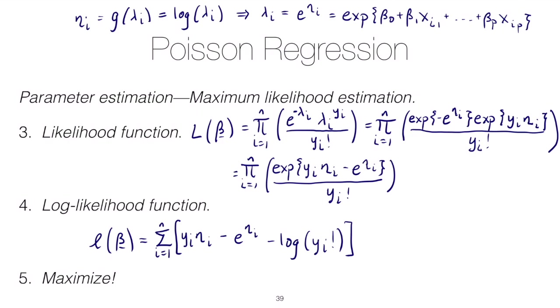So in the next lesson we'll think about how to interpret the parameters of this Poisson regression model, and then we'll look at implementing this in R.